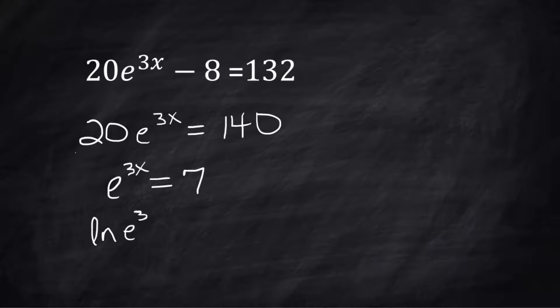Natural log of e^(3x) = natural log of 7. 3x comes down. 3x·ln(e) = ln(7).